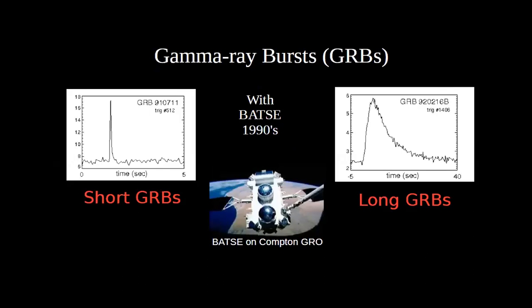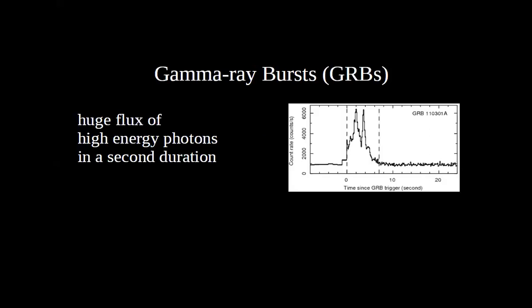From the 90s we started detecting many gamma ray bursts. On the left is a short gamma ray burst with a pulse of less than one second; on the right, a long gamma ray burst with a duration of 20 to 30 seconds. Every burst has its unique light curve — a small pulse, a bigger pulse, a double pulse, or a different structure.